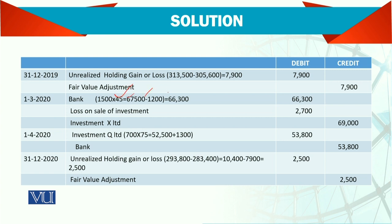This relates to 1545 shares and 6600 shares. The cost was $69,000. The realized loss goes straight to the profit and loss account — there is no adjustment needed there. For the purchase of Q: 700 shares at 75 rupees per share plus the brokerage fee of 1300. Debit investments and credit bank account for this new investment.